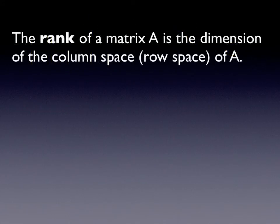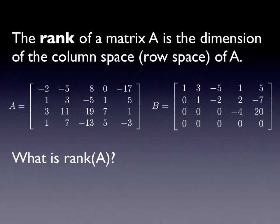The rank of a matrix A is the dimension of the column space or row space of A. The dimension of the column space and row space are both just the number of leading ones after A has been put into reduced row echelon form. For this matrix A, looking at its reduced row echelon form B, we see one leading one in the first column, one in the second column, and one in the fourth column — so we have three leading ones. Therefore, the rank of the matrix is three.